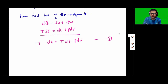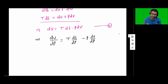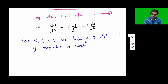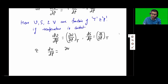If I divide equation 1 by dP, I can write that dU over dP is equal to TdS over dP minus p times dV over dP. Now, U, S, and V — that is internal energy, entropy, and volume — are functions of P and T. So if my temperature is constant, at constant temperature, dU over dP is equal to del U over del P at constant temperature. Similarly, dS over dP equals del S over del P at constant T, and dV over dP can be written as del V over del P at constant temperature.